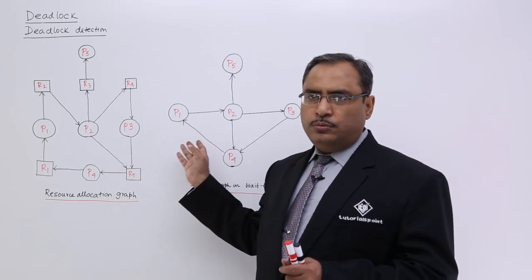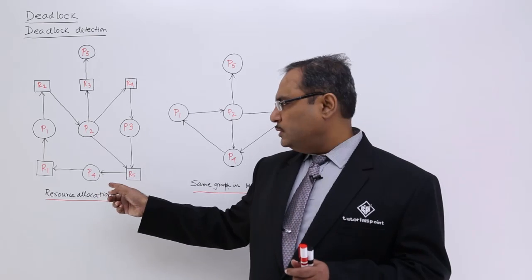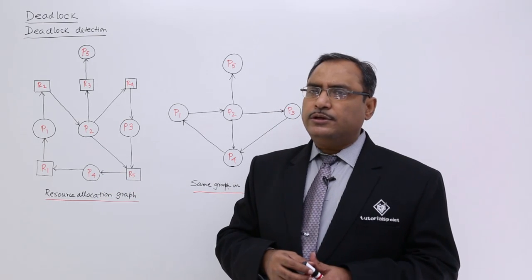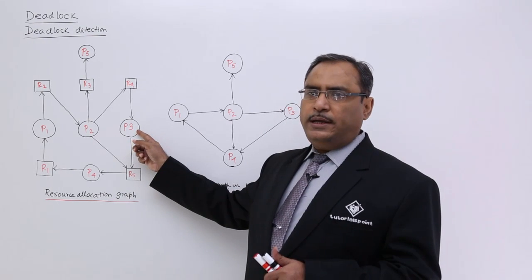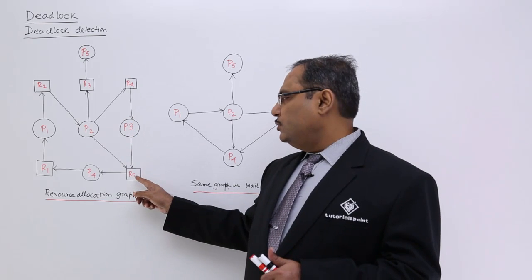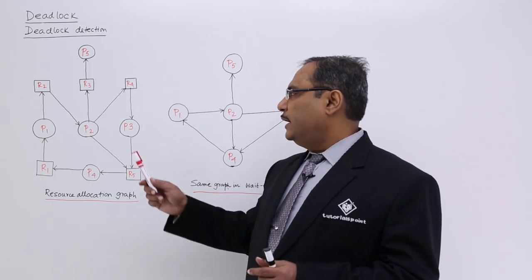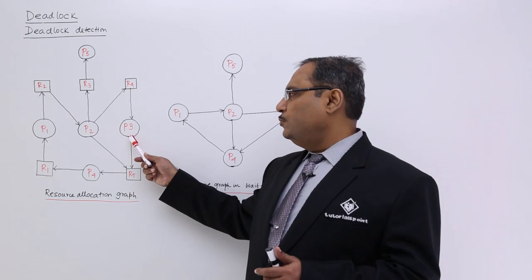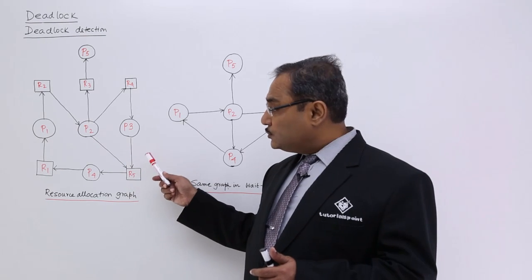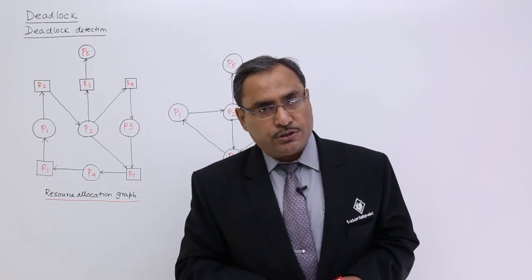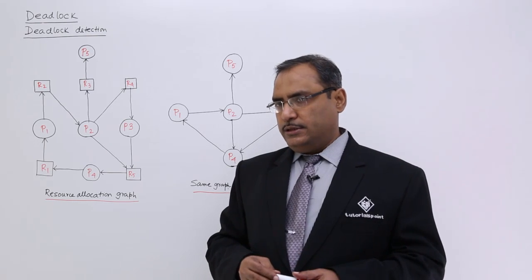Deadlock detection can be done using graphs. This graph, which we discussed earlier, is the resource allocation graph. It has four components: the process, which is encircled; the resource, which is enclosed within rectangles; request edges, directed from process to resource; and allocation edges, directed from resource to process.